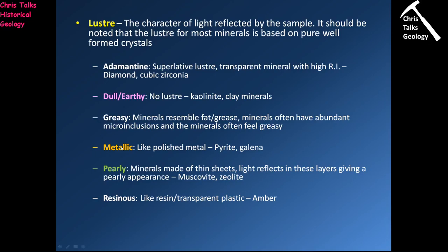Minerals with a metallic luster look like polished metal — the light bounces off the surface. This applies to minerals like pyrite (iron sulfide, also called fool's gold) and galena (a lead sulfide mineral), both of which are very metallic. Pearly luster is when minerals are made of thin sheets, like the micas — light reflects within the layers, giving a pearly appearance.